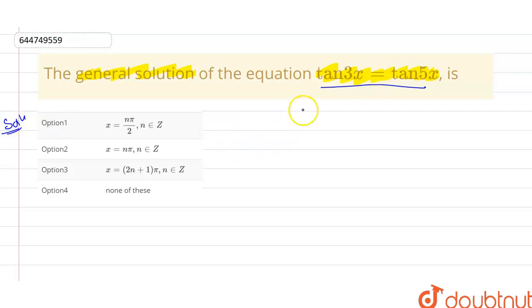First of all, we know that when tan θ is equal to tan α, in that case the general solution comes out as θ = nπ + α, right? You guys know about it, nπ + α.